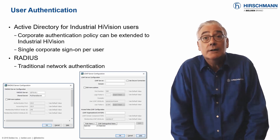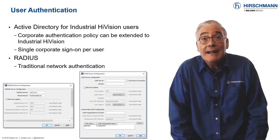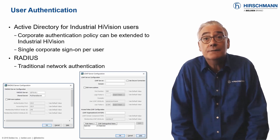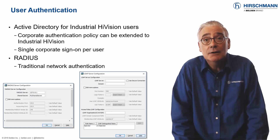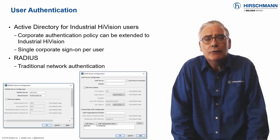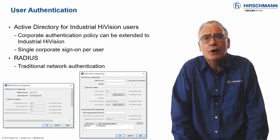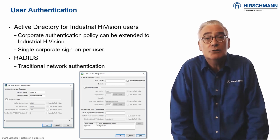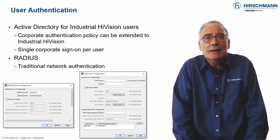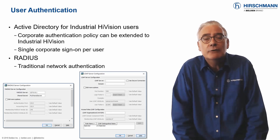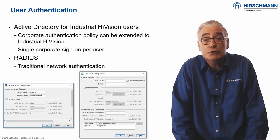An older but very widely used method of central authentication is RADIUS. Traditionally, RADIUS is used to authenticate login credentials for switches, but for consistency, we've also made RADIUS available for Industrial HiVision authentication.